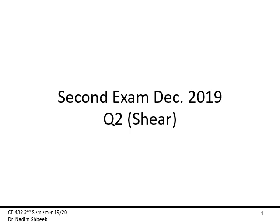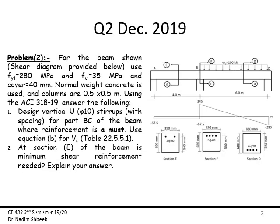Assalamu alaikum, how are you doing? Today I will be showing you the solution of a question from last semester's second exam. It's related to shear. The question says: for the beam shown, the shear diagram is provided. Use fyt = 280 MPa, f'c = 35 MPa, cover = 40 mm, normal weight concrete, and columns are 0.5 m × 0.5 m.